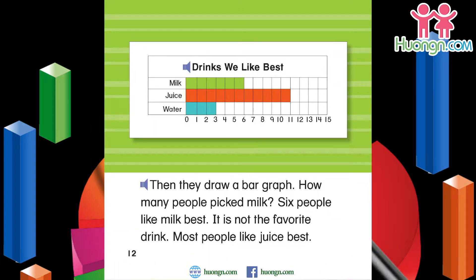Then they draw a bar graph. How many people picked milk? Six people like milk best. It is not the favorite drink. Most people like juice best.